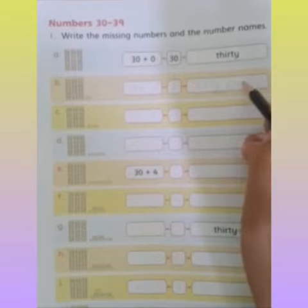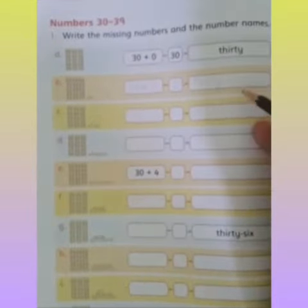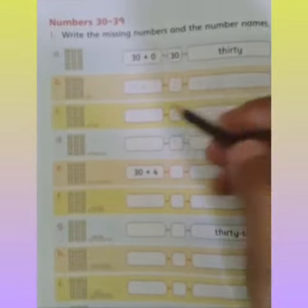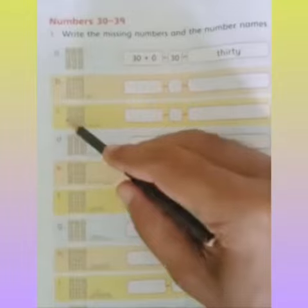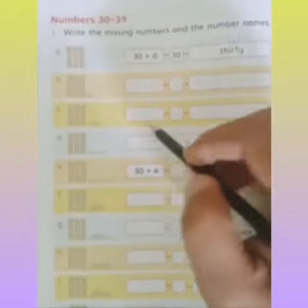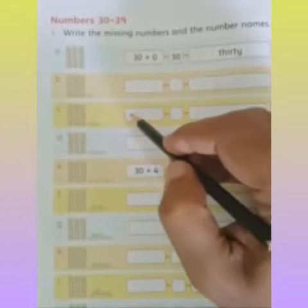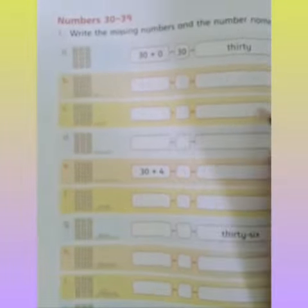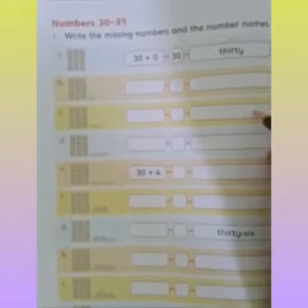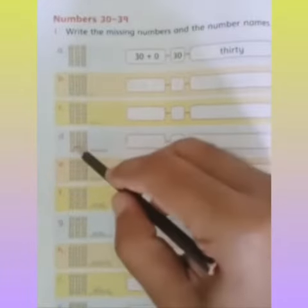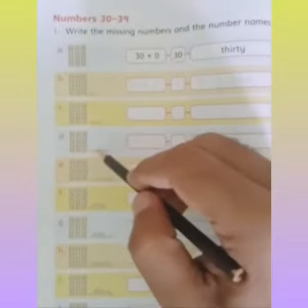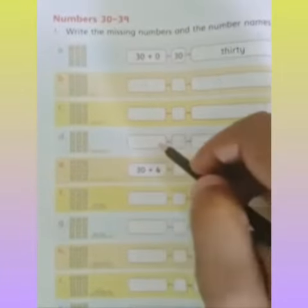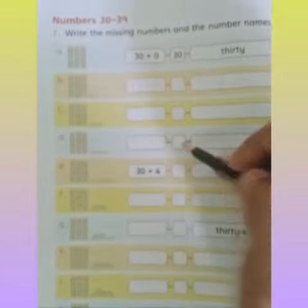So you have to count the bars of 10 and the units. Do the next part — count the tens and the units, write the number, and write the number in words. The third one, same as before, becomes 34.